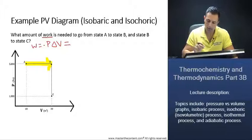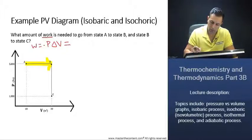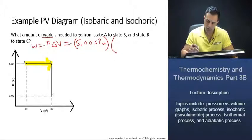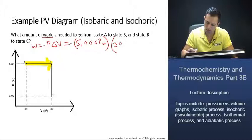Here, we don't have a change in pressure going from A to B. So our answer is just going to be 5,000 pascals. And our change in volume, our final volume is going to be 30 meters cubed minus 10 meters cubed.